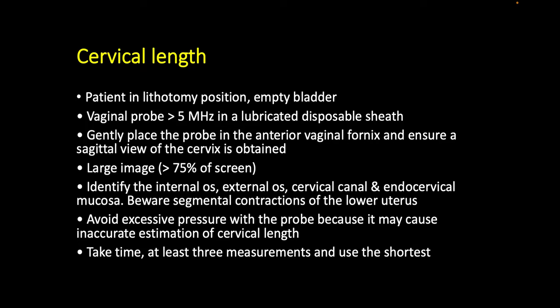One should use a vaginal probe with a frequency of more than 5 megahertz, which is usually the case in any basic machine, and it should be covered with a disposable lubricated sheet. Then this probe is placed in the anterior vaginal fornix to obtain a longitudinal or sagittal view of the cervix.